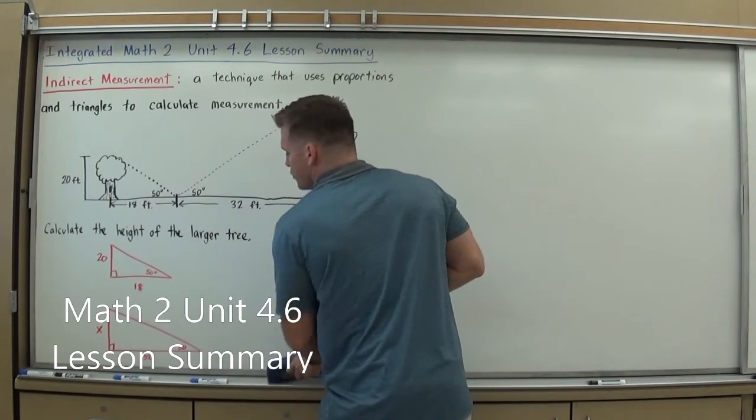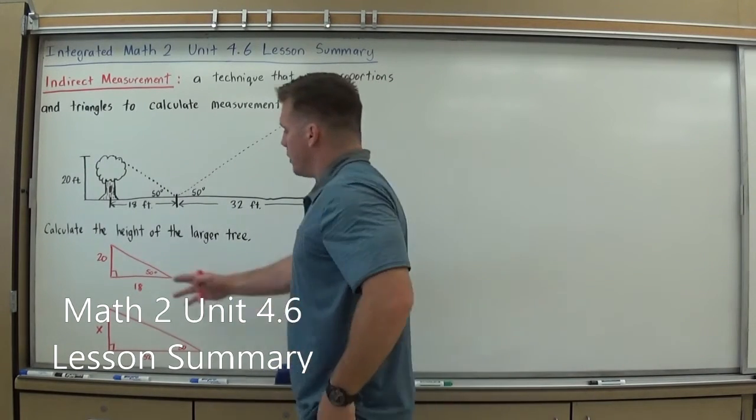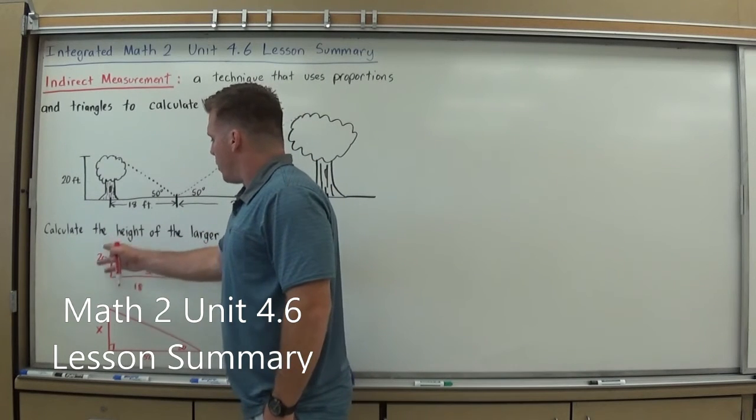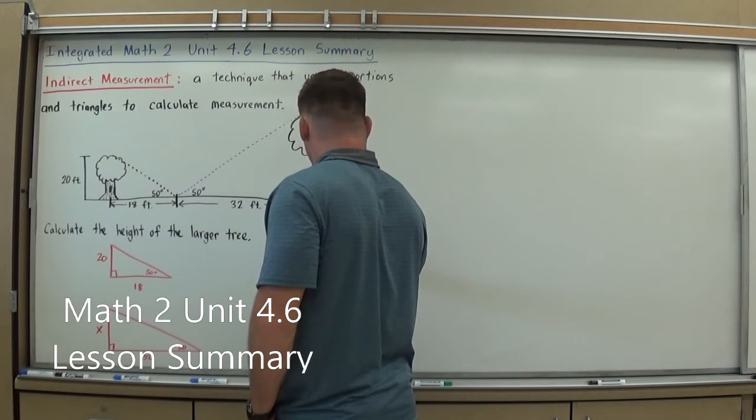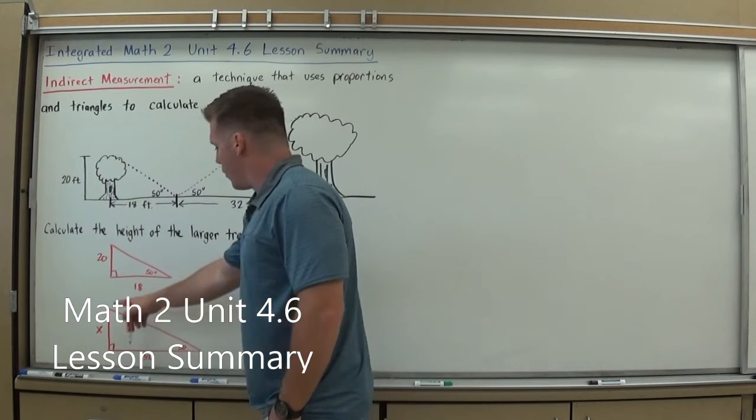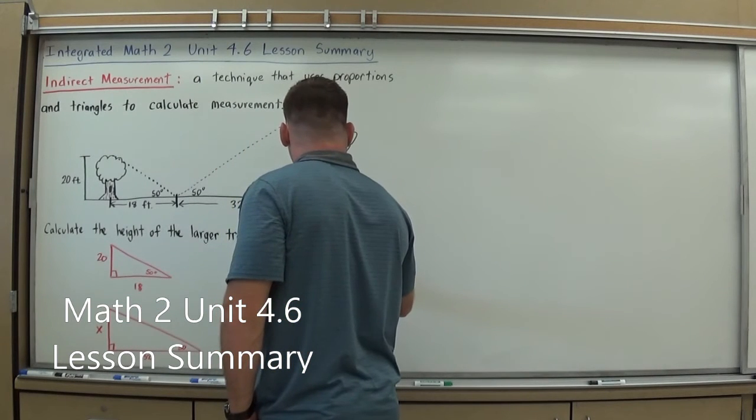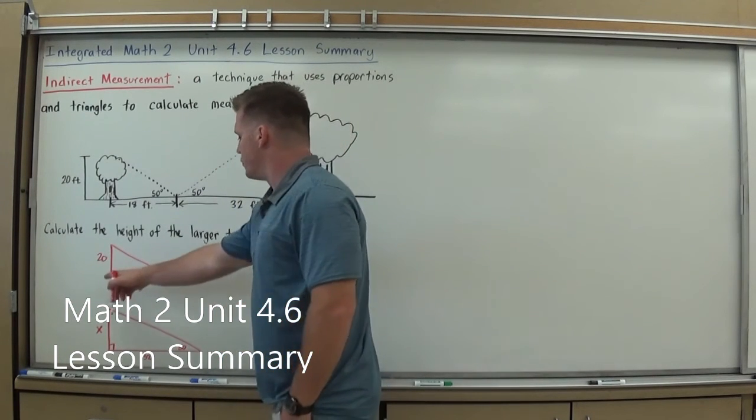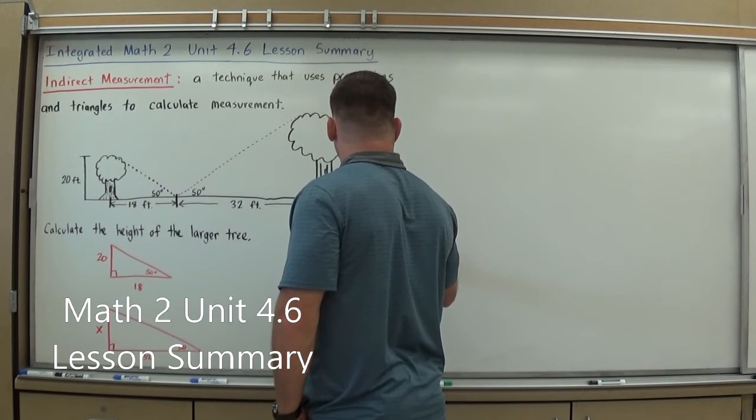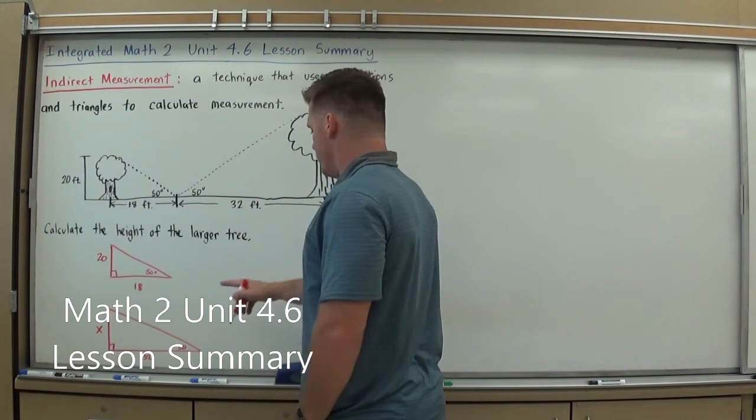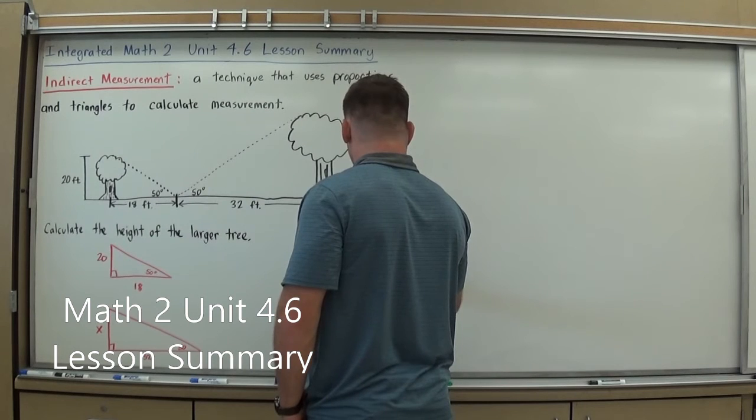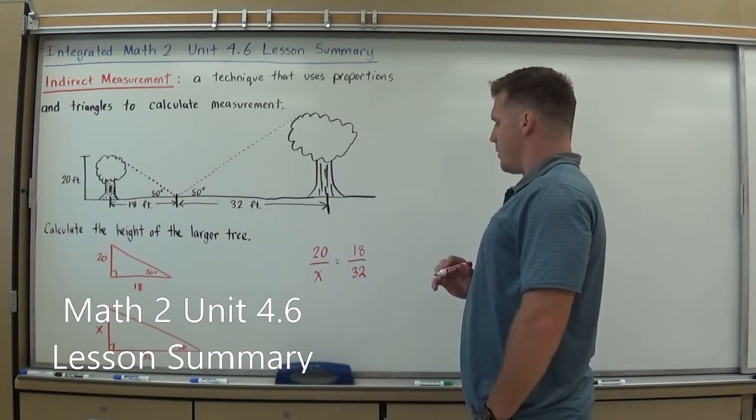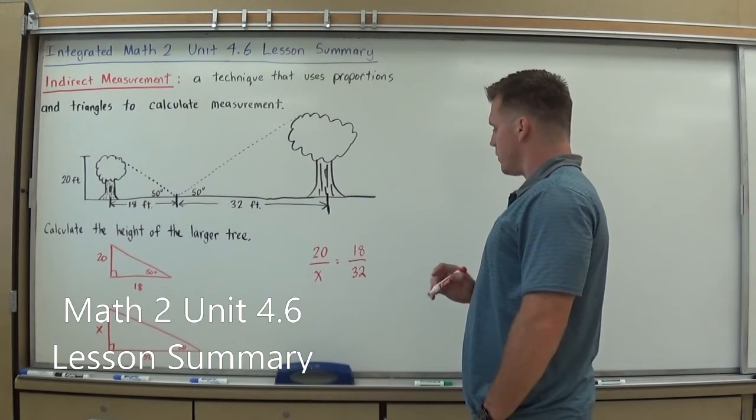And now I can just set up my proportion. The altitude of the small triangle is 20. And so I'm going to set that over the altitude of the larger triangle, X. And it should be equal to the base of the smaller triangle, 18, over the base of the larger triangle, 32. And by setting that up, I can now cross-multiply and solve.